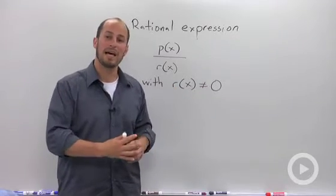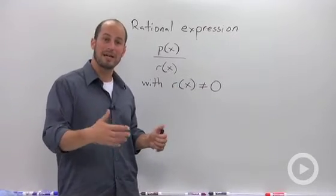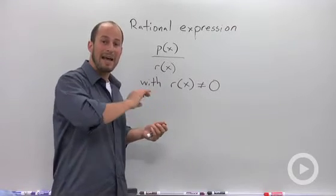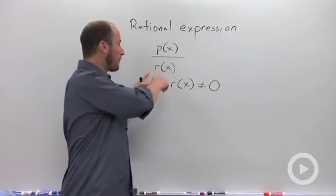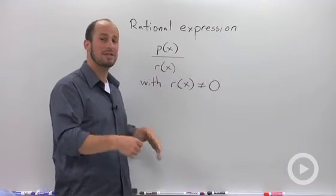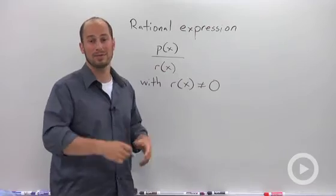In addition, we have our domain of a rational expression, which is basically everything except for what makes the denominator zero. The only restrictions we're going to have are that we can't divide by zero, so our restrictions are when our denominator is equal to zero.